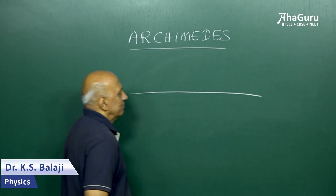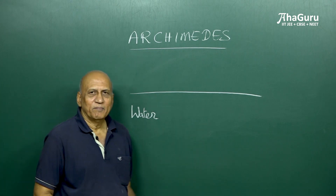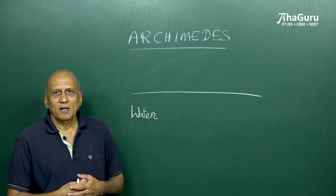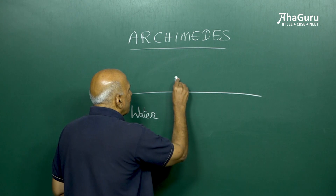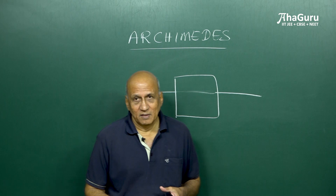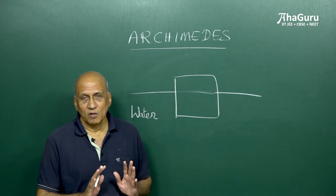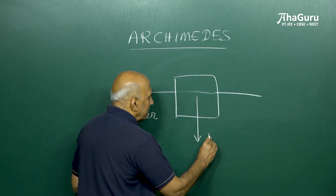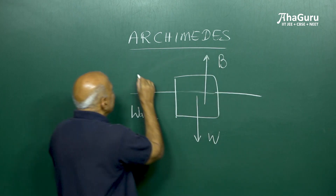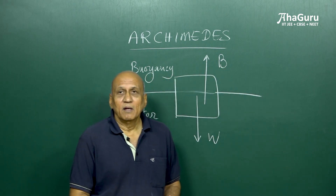Suppose we have a fluid — in this case, water. This is the surface of a lake, and let's take an object and put it on the lake. It sinks or it may float. There are two forces acting on it. Let's say it's a block of wood which is floating. If it is floating, it's neither accelerating up nor down, so the net force must be zero. One force is the weight W, and the other is the force exerted by the surrounding liquid — that is called the buoyancy. Buoyancy is the force exerted by the surrounding liquid in a direction opposite to gravity.